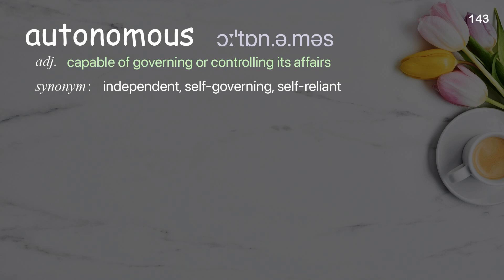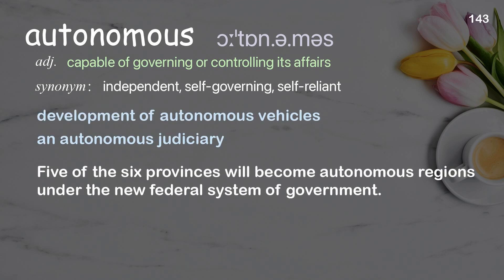Autonomous: capable of governing or controlling its own affairs. Examples: development of autonomous vehicles, an autonomous judiciary. Five of the six provinces will become autonomous regions under the new federal system of government.